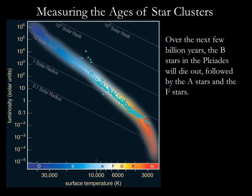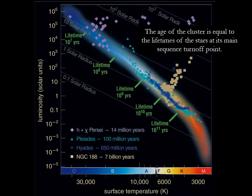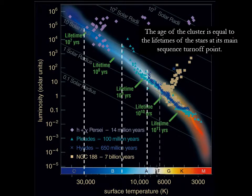Over the next few billion years, the B stars in the Pleiades will die out, followed by the A stars and the F stars. If we could make an HR diagram for the Pleiades every few million years, we would find its main sequence gradually growing shorter. This figure compares the main sequence of other star clusters. In each case, the age of the cluster is equal to the lifetimes of the stars at its main sequence turnoff point. The older the cluster is, the more stars that have turned off the main sequence, and the redder its turnoff point.